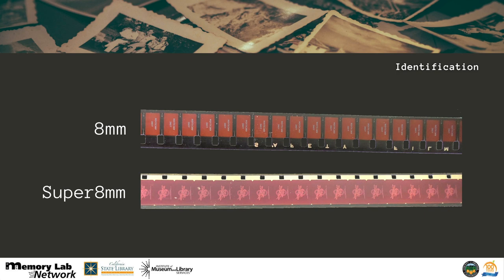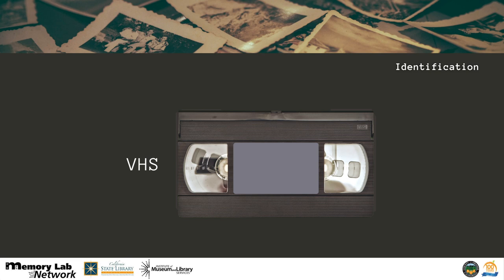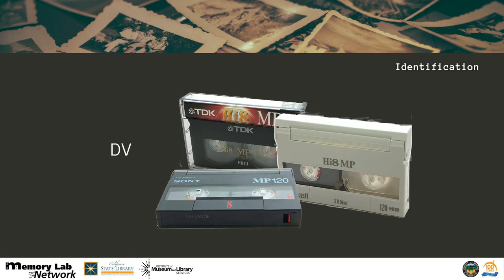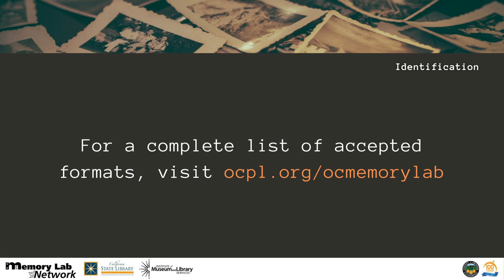The video formats for film that OC Memory Lab accepts are 8mm and Super 8mm. You can tell what you have is film because typically it is on a reel and has perforations — holes along the edges — and there will usually be an image on the film you can see by holding it up to the light. The video formats for videotapes that the OC Memory Lab accepts are VHS, DV (Digital Video), and Mini DV. For a complete list of accepted formats, visit ocpl.org/OCMemoryLab.